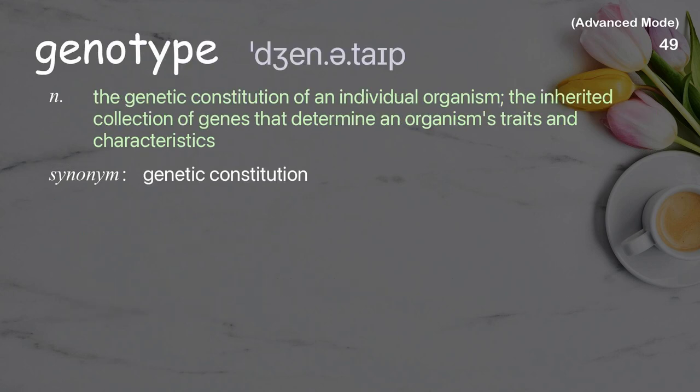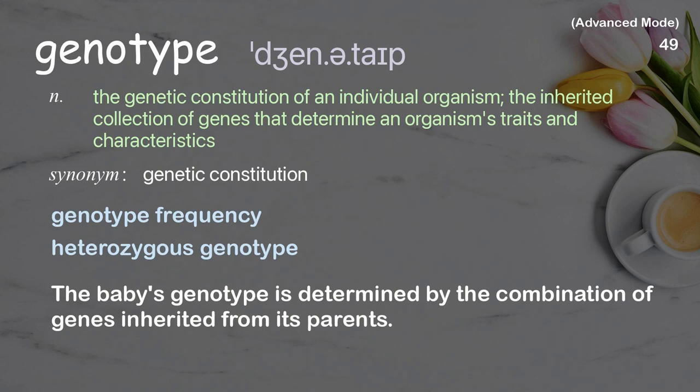Genotype: the genetic constitution of an individual organism; the inherited collection of genes that determine an organism's traits and characteristics. Examples: genotype variation. The baby's genotype is determined by the combination of genes inherited from its parents.